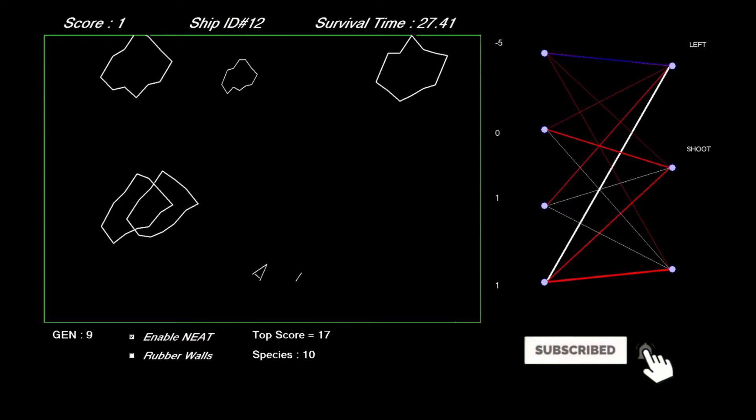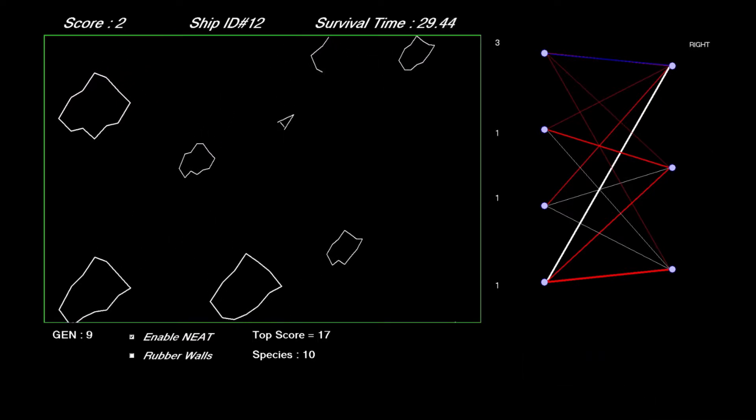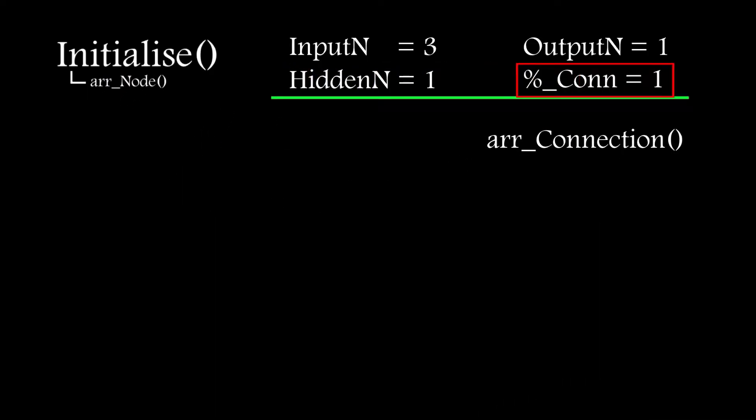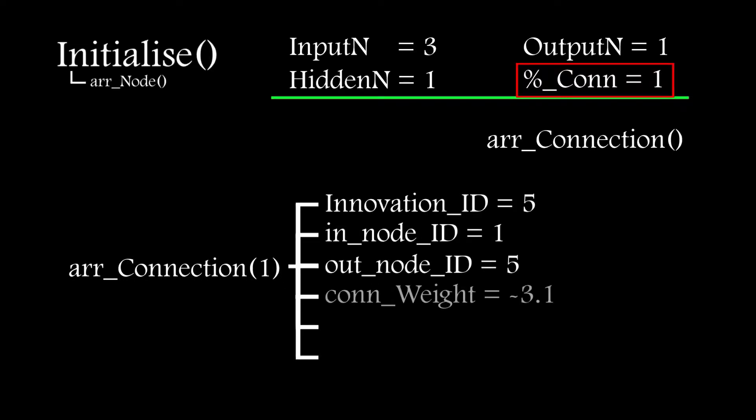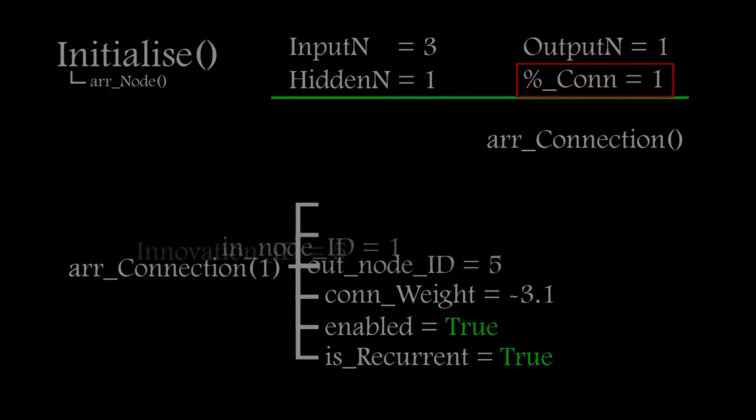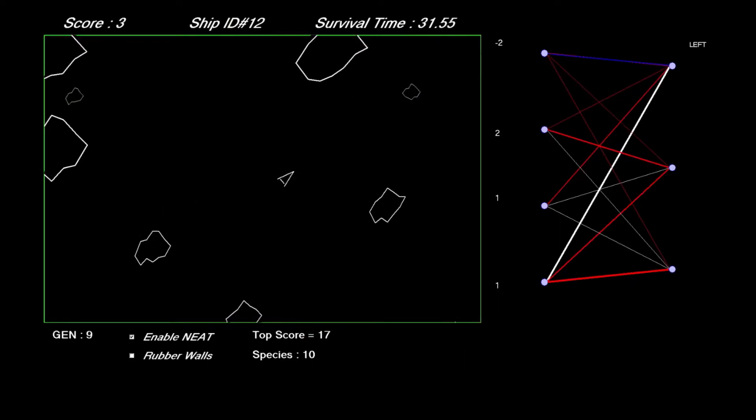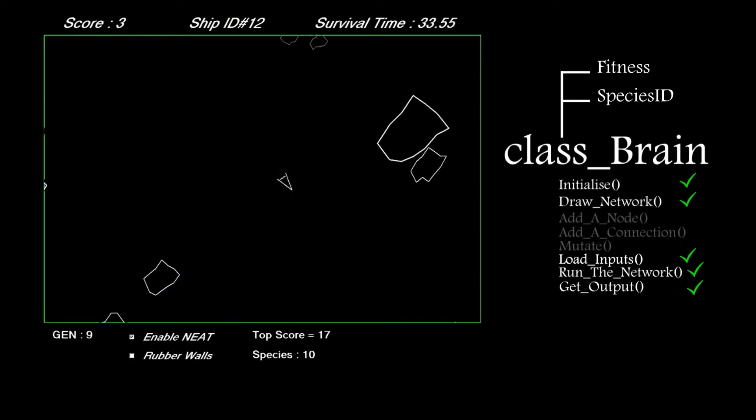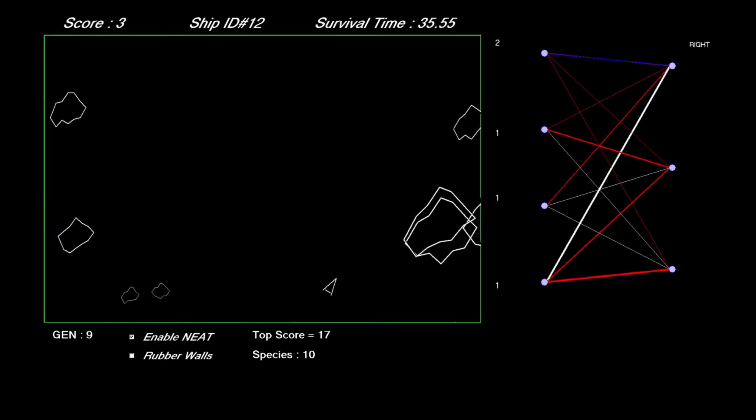Now a recurrent connection is processed in exactly the same way as a regular connection. It's got both input and output values and a connection weight just the same as any other connection. They get added during the mutation phase when the add connection probability is met but only if they satisfy the conditions for a valid connection.